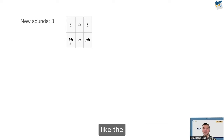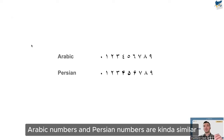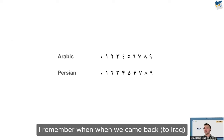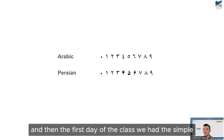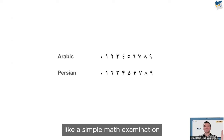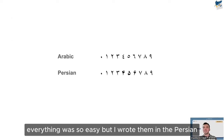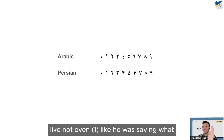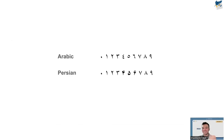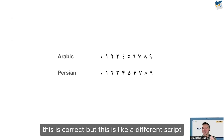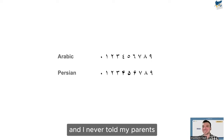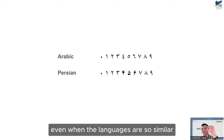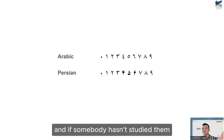For Persian, you really only need to learn three new sounds compared to what you already know. Regarding numbers: Arabic and Persian numbers look similar but are slightly different. I remember coming back from Iran to Iraqi Kurdistan, and on the first day of class we had a basic math exam — I got everything right but wrote the numbers in Persian script. The teacher gave me zero and didn't even recognize what I'd written. Even when languages are very similar, the differences can make things unrecognizable to someone who hasn't studied them.